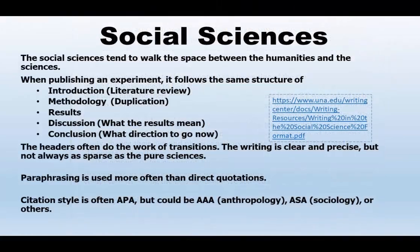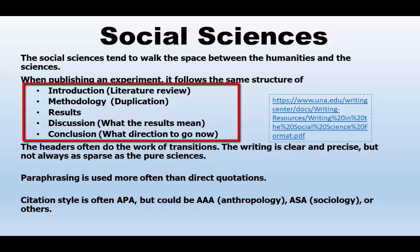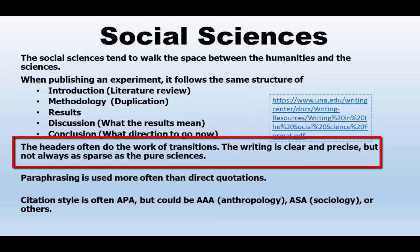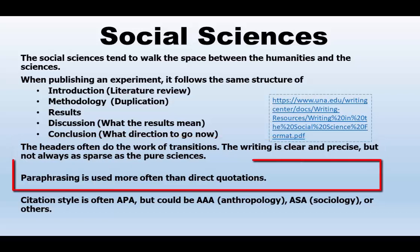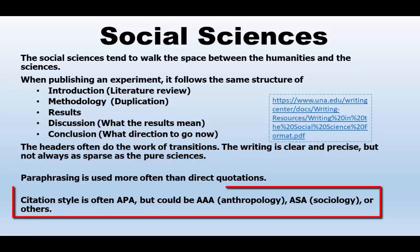The social sciences tend to walk the space between the humanities and the sciences. When published as an experiment, it may follow the same structure as science: introduction, methodology, results, discussion, and conclusion. Headers often do the work of transitions here too. The writing is clear and precise, but not always as sparse as the pure sciences. Paraphrasing is used more often than direct quotations. In fact, the APA 7th edition actively encourages paraphrasing rather than direct quotation, unless the quotation is a definition or particularly well phrased. Citation style is often APA, but could be AAA, ASA, or others. Your professor should tell you what style to use.